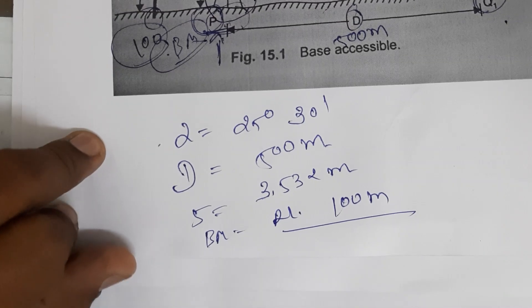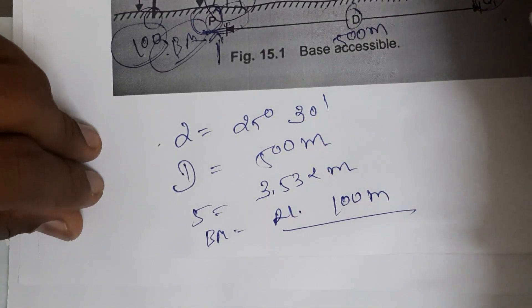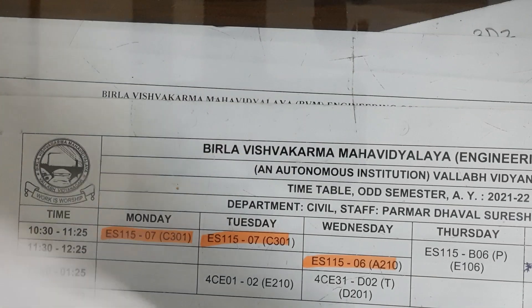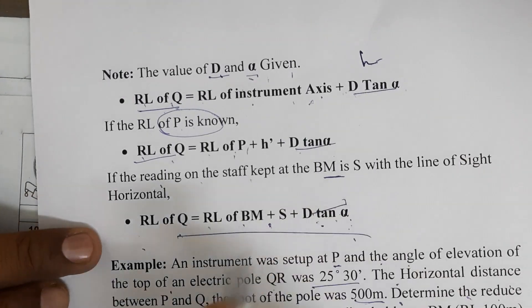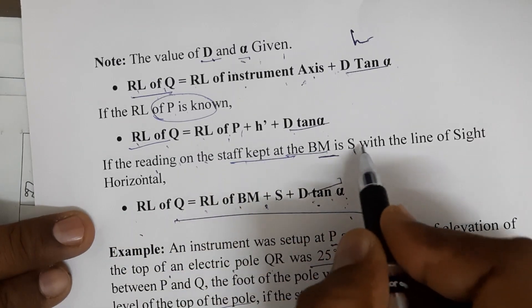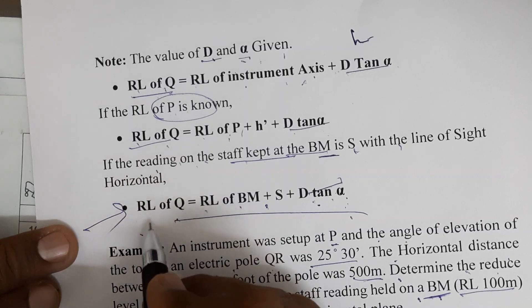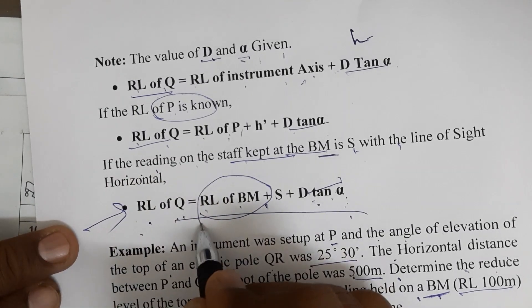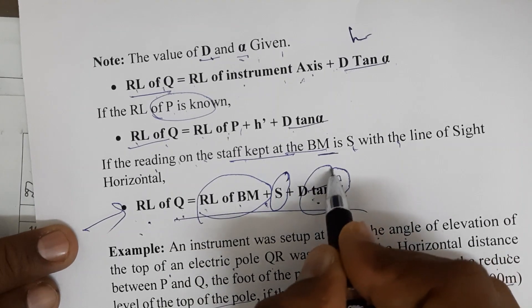Since the benchmark and staff reading are given, we use the equation mentioned in the previous video: when a reading on a staff is kept at the benchmark, the RL of Q equals RL of BM plus the staff reading plus D·tan(α).